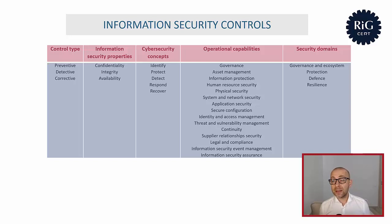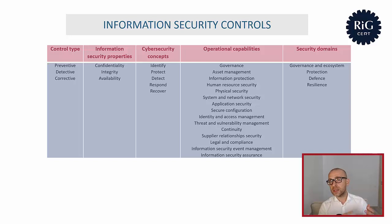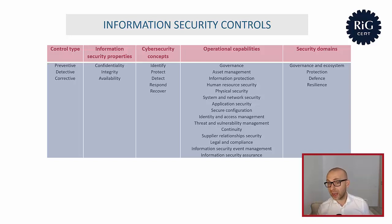The next category of attributes covers information security properties. Each control is intended to preserve one or more characteristics of information security: confidentiality, integrity, and availability. Cybersecurity concepts is another attribute category with five values: identify, protect, detect, respond, and recover.